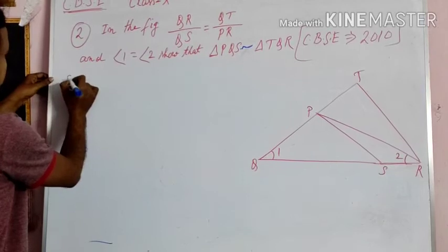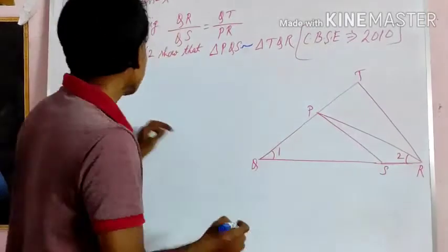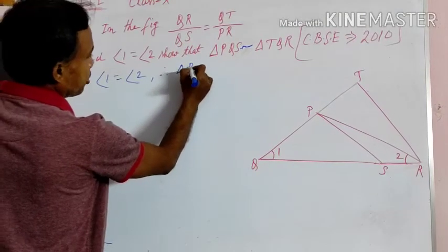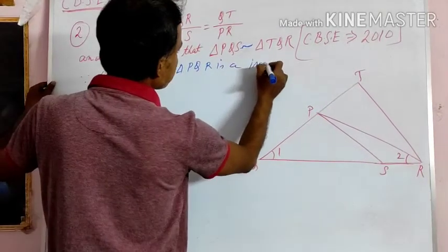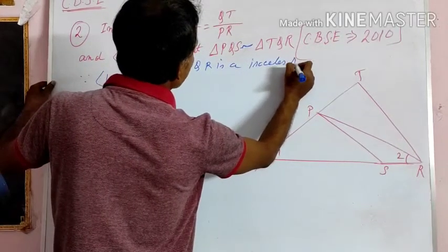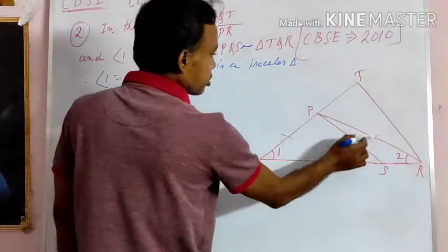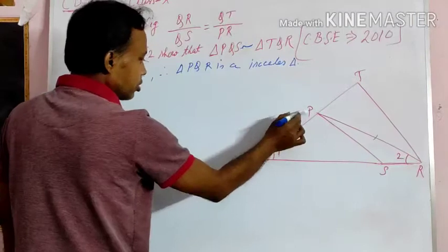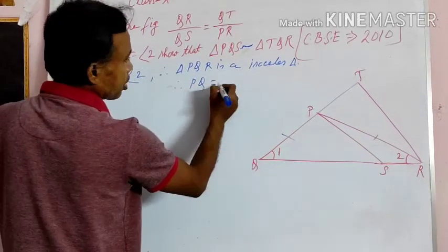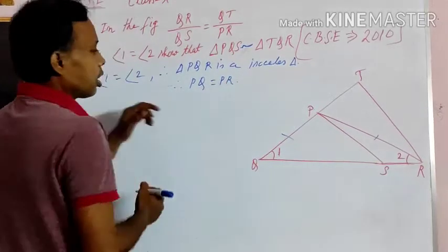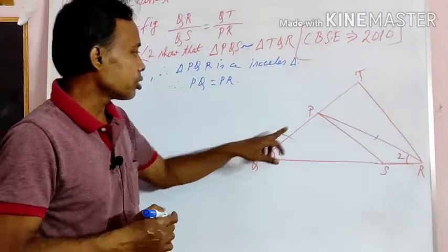Since angle 1 is equal to angle 2, therefore in triangle PQR, it is an isosceles triangle, because two sides are equal. Since angle 1 equals angle 2, the side opposite to angle 1, which is PR, must be equal to the side opposite to angle 2, which is QR. Therefore, we can write PQ is equal to PR.